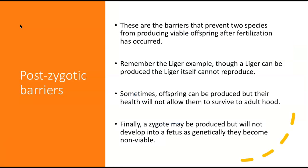Postzygotic barriers are barriers that prevent two species from producing viable offspring even though they can have an egg fertilized by sperm. Remember the liger and mule examples — they can be produced, but they themselves cannot reproduce. Sometimes offspring can be produced but their health won't allow them to survive to adulthood. Finally, a zygote might be produced but will not develop into a fetus because it becomes genetically non-viable — you get a couple of cells, and then those cells just die because they never become a fetus.